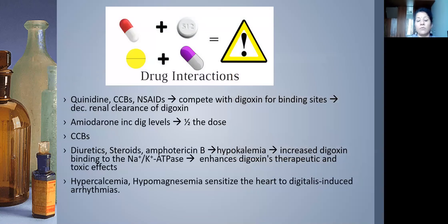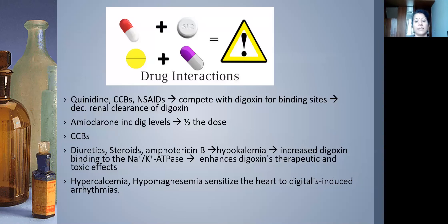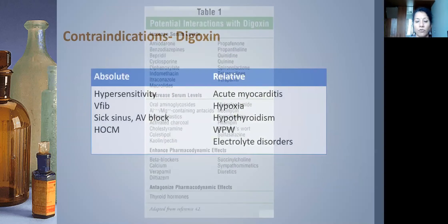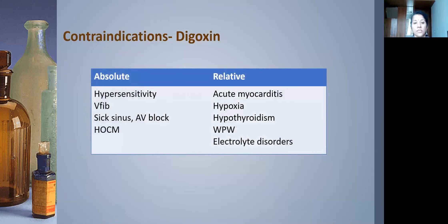Monitoring: periodic ECGs, electrolytes, and renal function. Check serum digoxin level only if toxicity is suspected. Drug interactions: quinidine, calcium channel blockers, and NSAIDs compete with digoxin for renal clearance. Amiodarone is a critical interaction — it increases digoxin levels, so halve the digoxin dose when combining with amiodarone. Hypokalemia, hypercalcemia, and hypomagnesemia all sensitize the heart to digoxin-induced arrhythmias. Contraindications include hypersensitivity, sick sinus syndrome, AV block, WPW syndrome, and underlying electrolyte disorders.